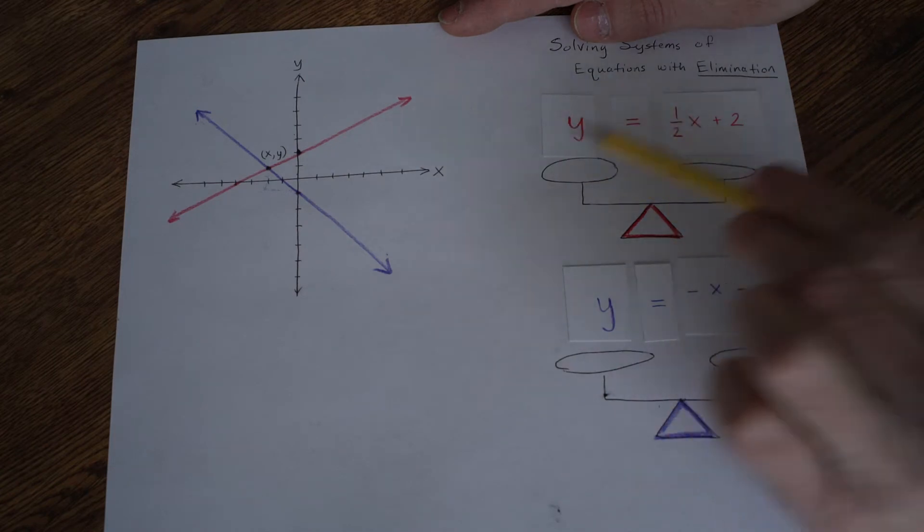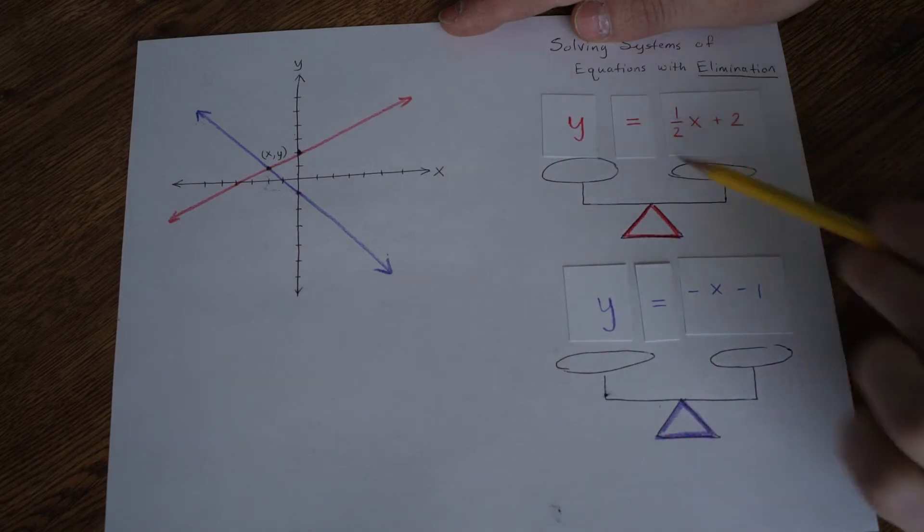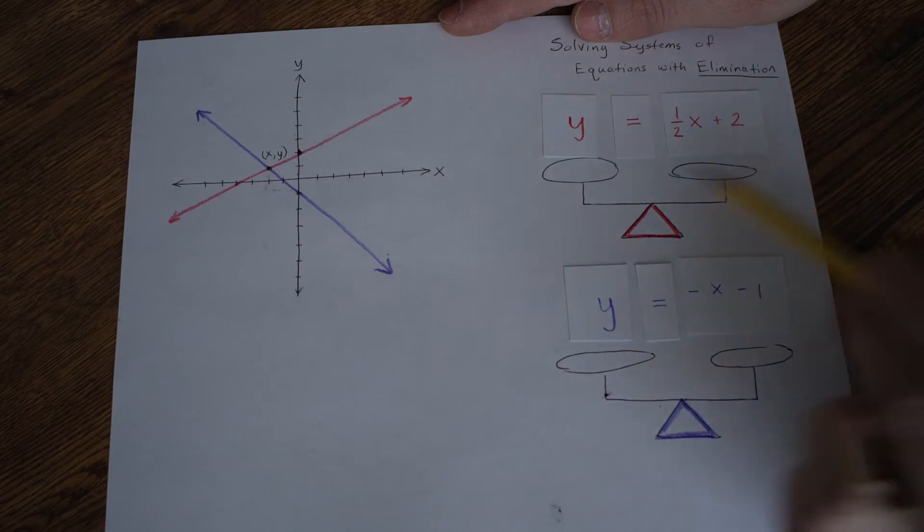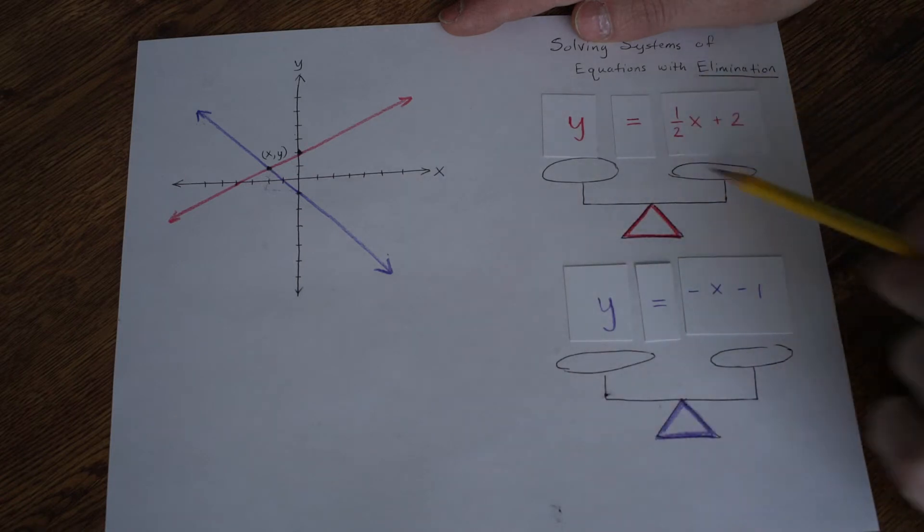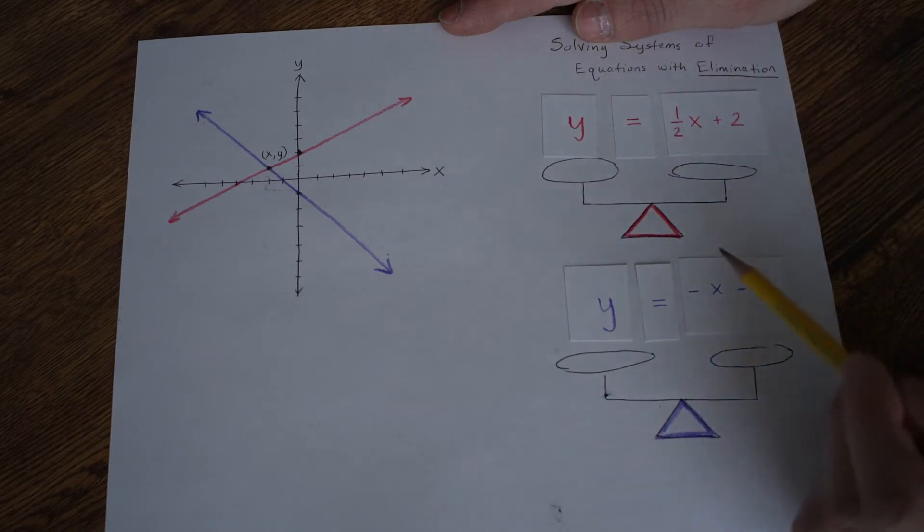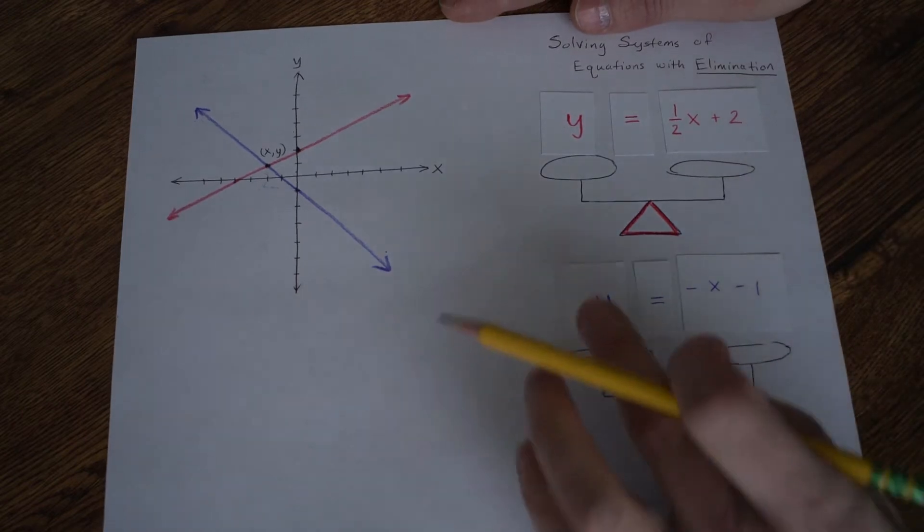So this is 1. That means this right here would have to be 1 also to balance out the scale, so that equals 1 as well, and this equals 1.